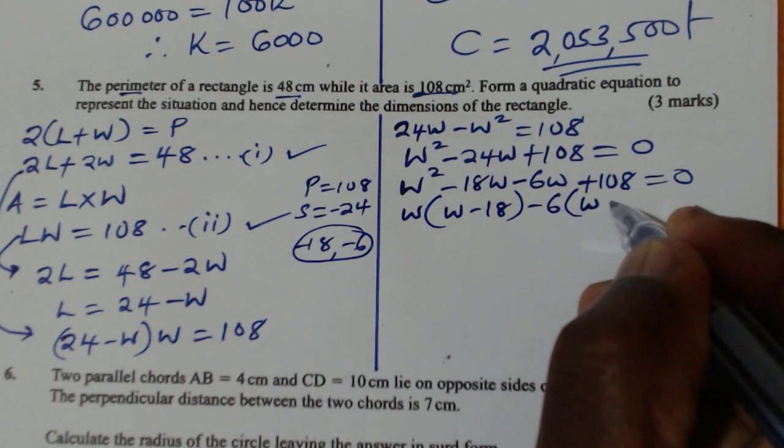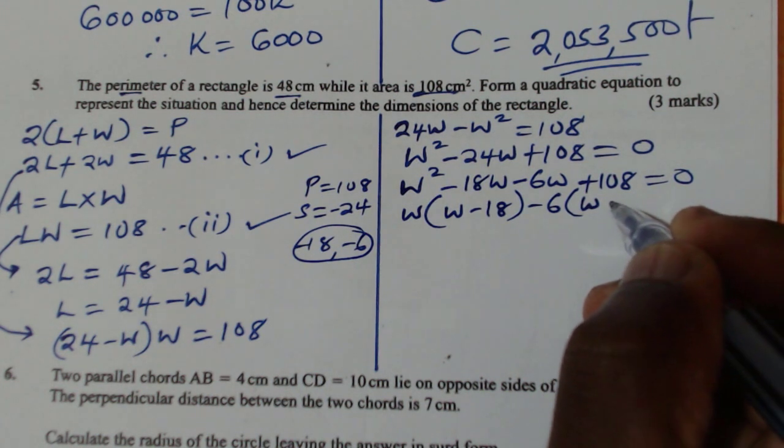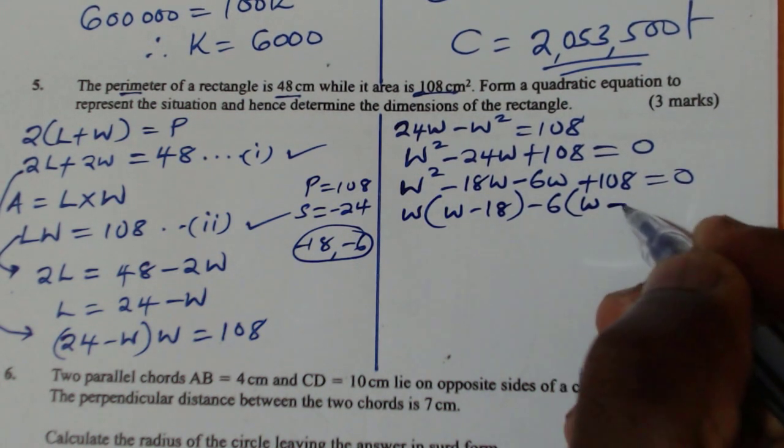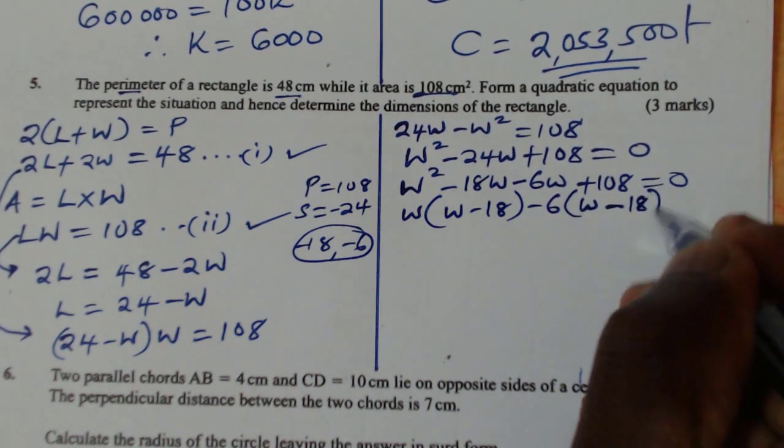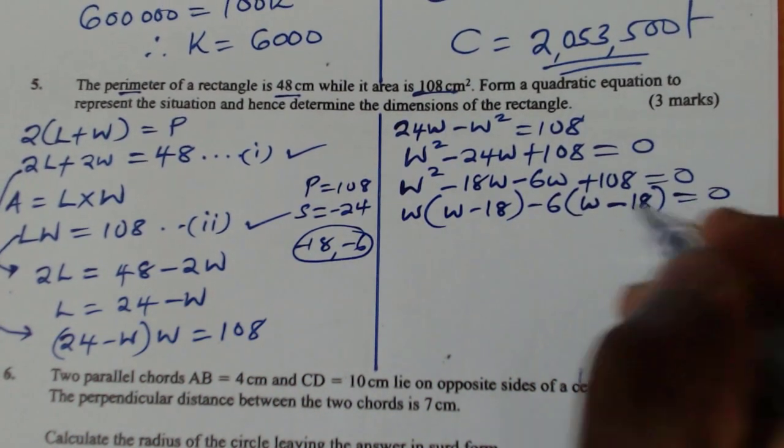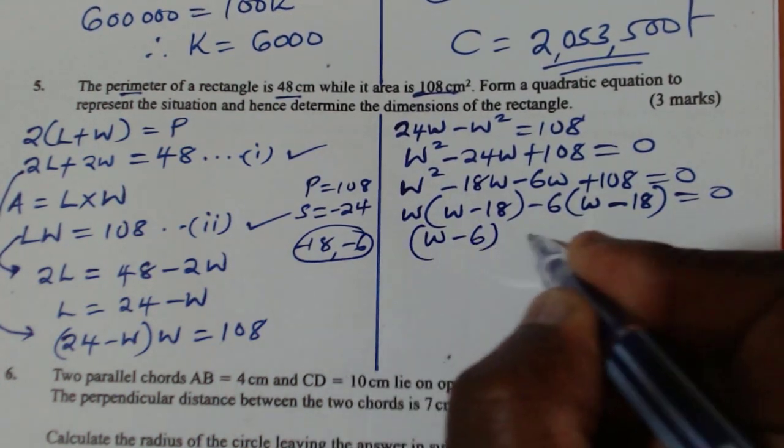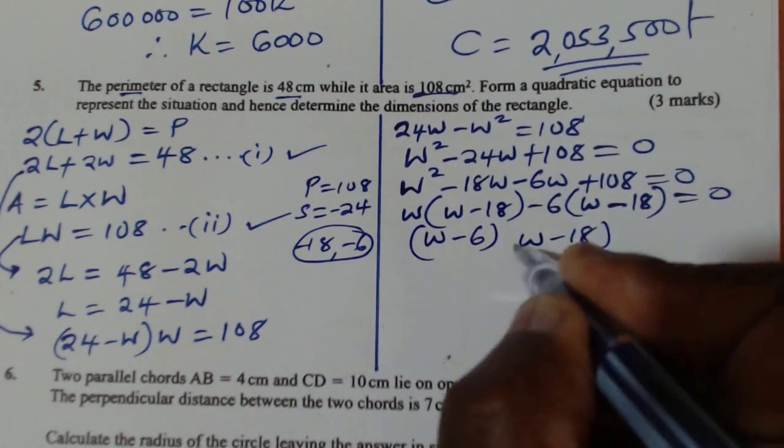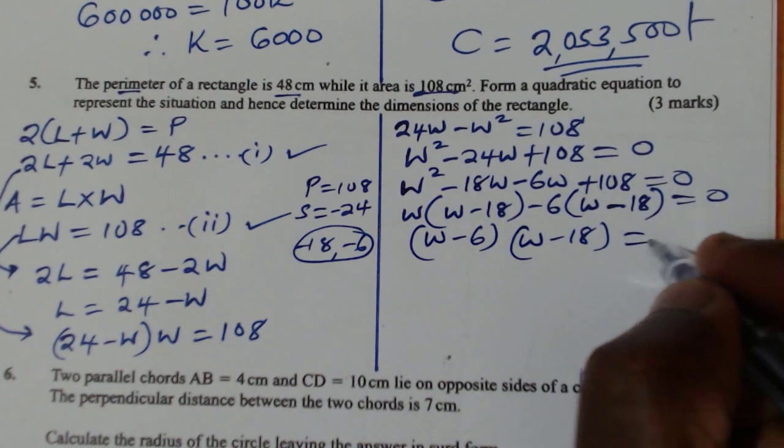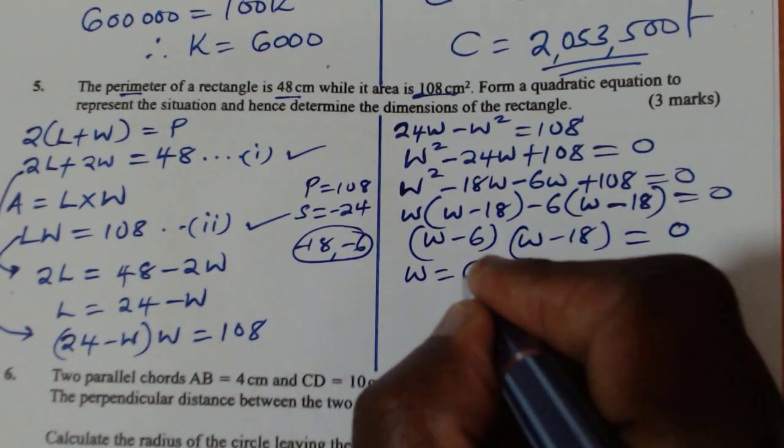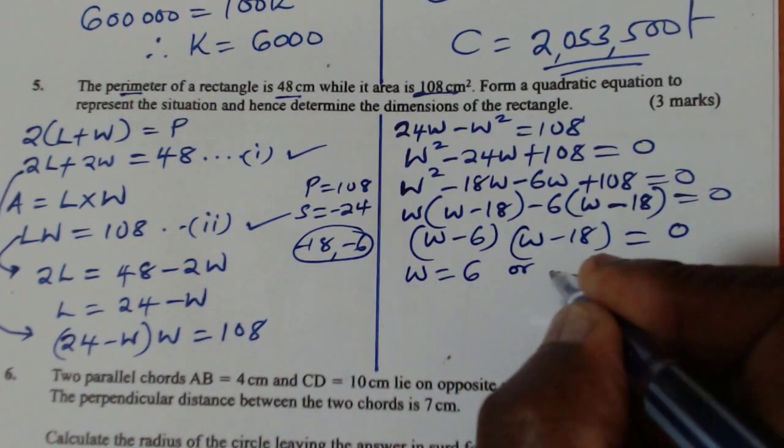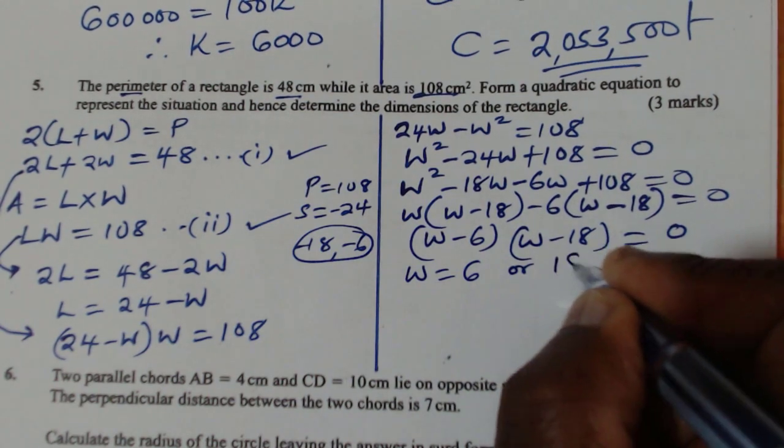So in this case, you get W minus 6 times W minus 18 equals 0. So you get W equals 6 or 18. So those are the two values.